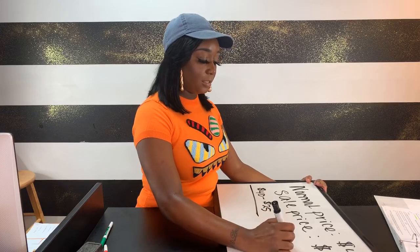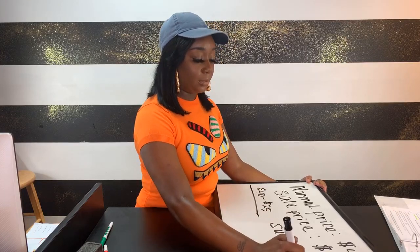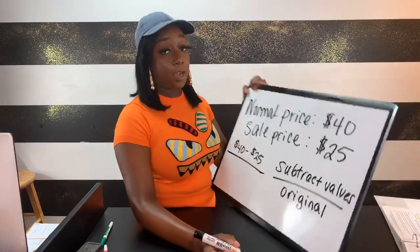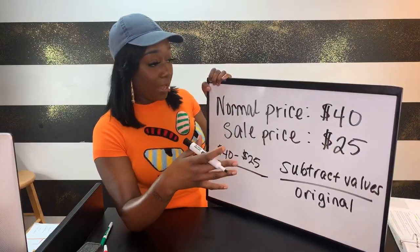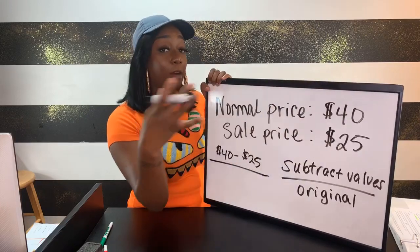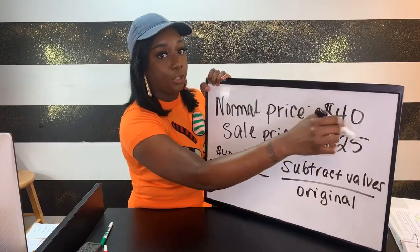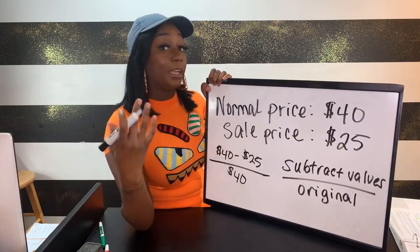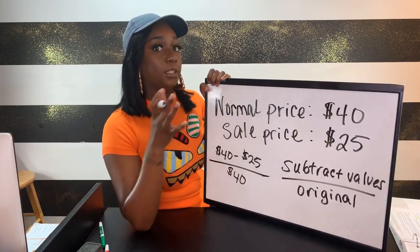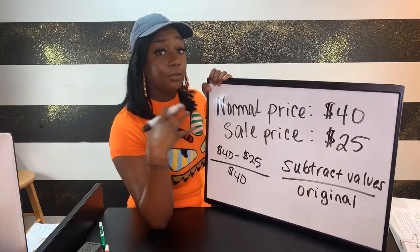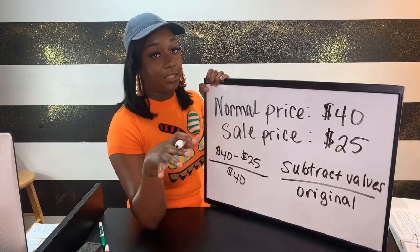We always divide by the original value. Original is always going to depend on context — what value did we start with. If we're looking for a percent decrease, we went from 40 to 25, so my original value is the larger number because that's where I started — in this case, 40. If it was a percent increase, it will always be the smaller number. When we say original value, this is whatever number we started with, and that's never going to change.